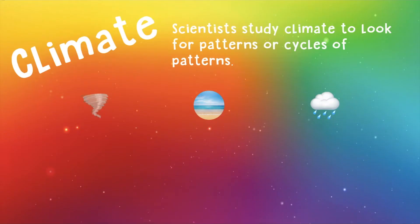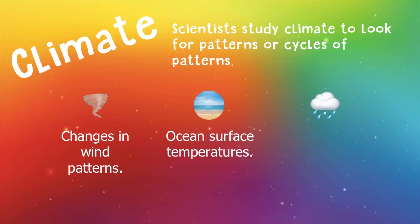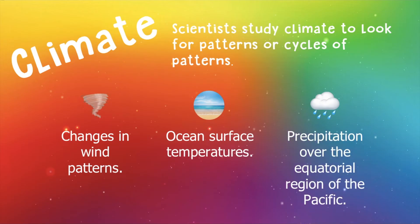Scientists study climate to look for patterns or cycles of patterns. They look for some of those patterns in the wind, changes in wind patterns, also changes in the ocean surface temperatures and precipitation over the equatorial region of the Pacific Ocean.